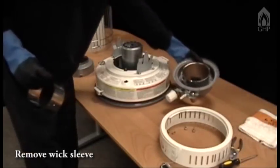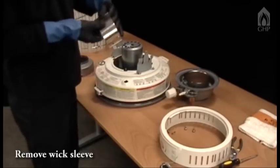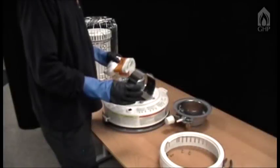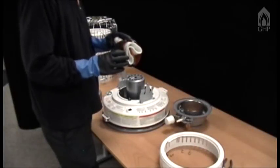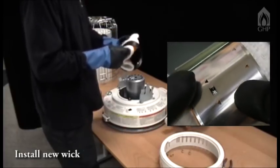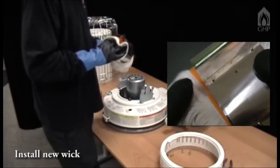Remove the wick sleeve from the bottom of the assembly. Place the new wick into the three holes on the wick sleeve in the upward direction.